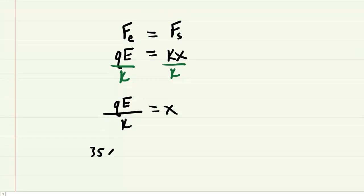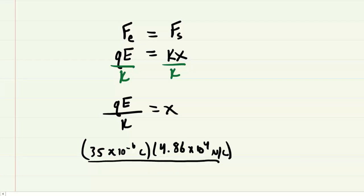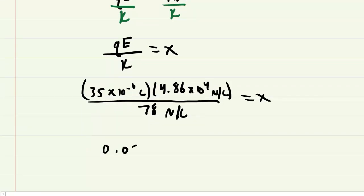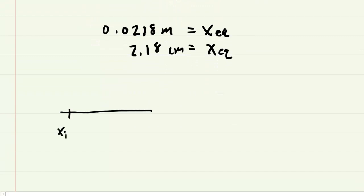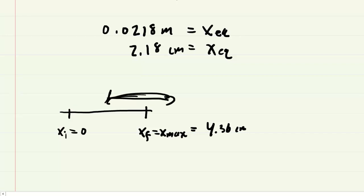Substituting in the values — Q is 35 times 10 to the minus sixth coulombs, E is 4.86 times 10 to the fourth newtons per coulomb, and k is 78 newtons per meter — we get an equilibrium position of 0.0218 meters, or 2.18 centimeters. Looking at the diagram: the block starts at 0, stretches the spring to x_max at 4.36 centimeters, and the equilibrium position at 2.18 centimeters is halfway between those two points.